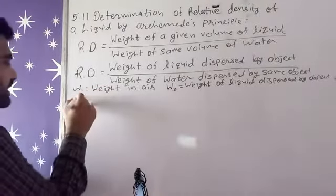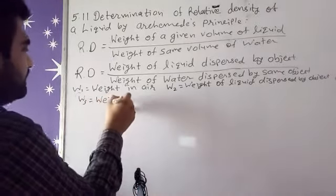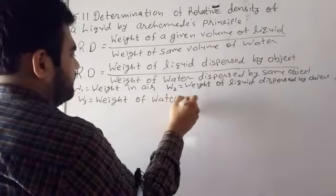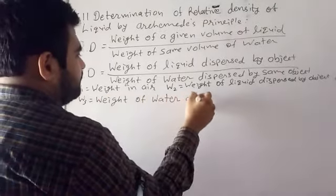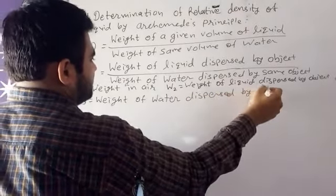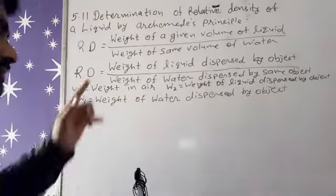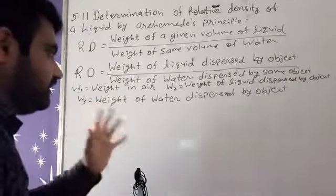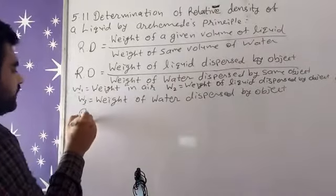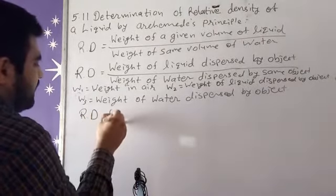We find its weight, and W3 is the weight of water dispersed by the same object. So now I am writing the formula of relative density of liquid using these weights W1, W2, and W3.